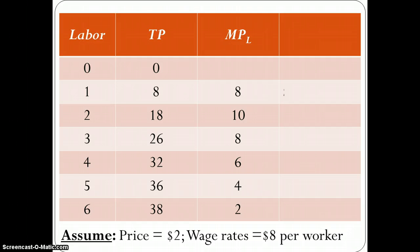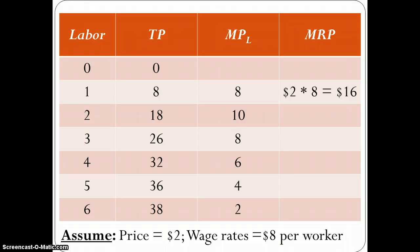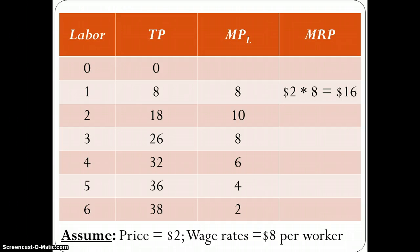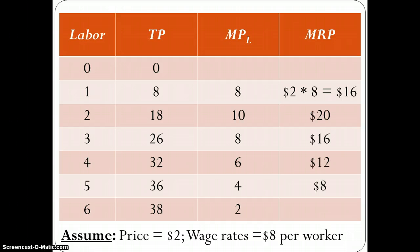We want to look at what's known as the marginal revenue product — how much the additional product each worker creates is actually worth. If we assume we can sell this good at $2 per unit, then the first worker creates $16 worth of product, since he created 8 units at $2 each. The second worker created 10 units at $2 apiece, so his marginal revenue product is $20. The third created 8 units, generating $16 worth of benefit. And then we can work our way down the table.